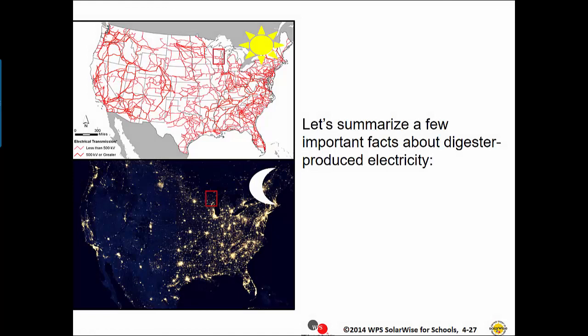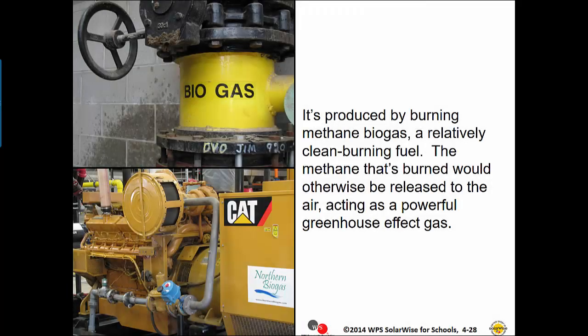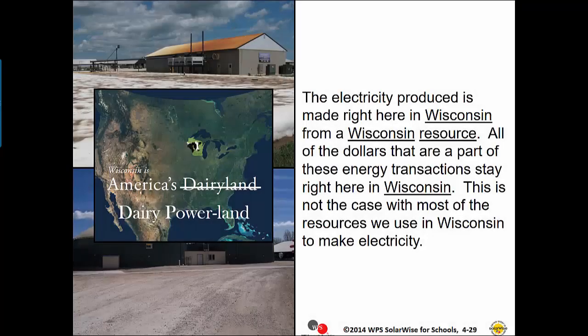Let's summarize a few important facts about digester-produced electricity. It's produced 24 hours a day, 7 days a week, from cow waste. It's produced by burning methane biogas, a relatively clean burning fuel. The methane that's burned would otherwise be released to the air, acting as a powerful greenhouse effect gas. The electricity produced is made right here in Wisconsin from a Wisconsin resource. All of the dollars that are part of these energy transactions stay right here in Wisconsin — this is not the case with most of the resources we use in Wisconsin to make electricity.